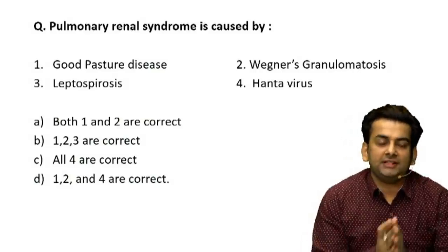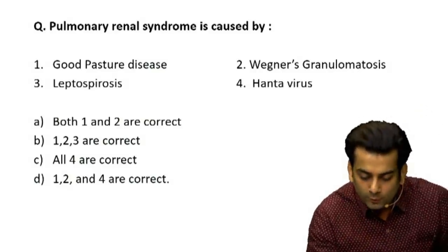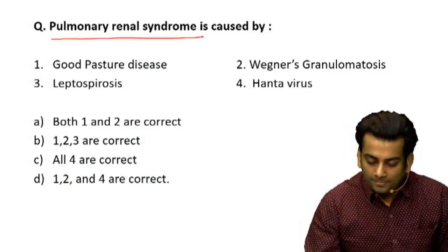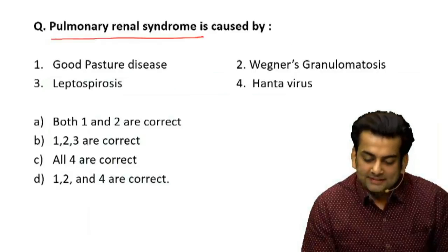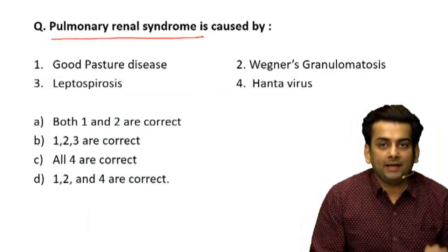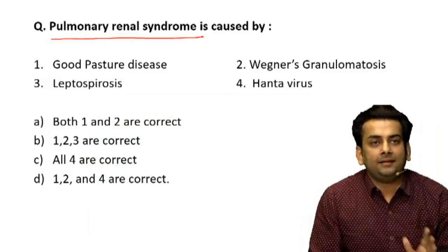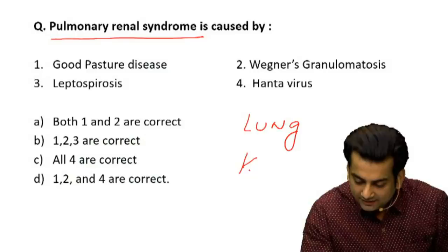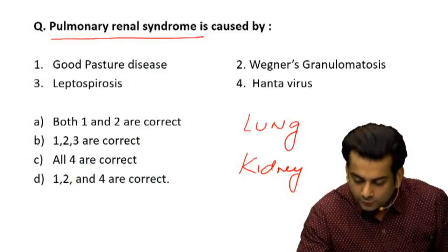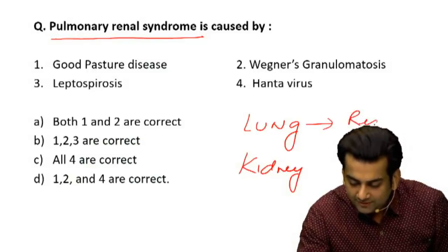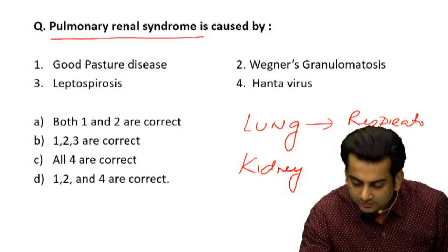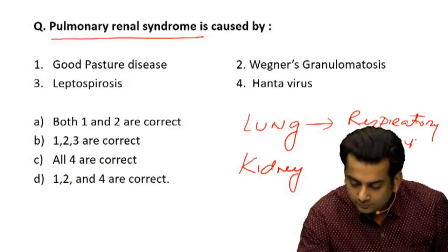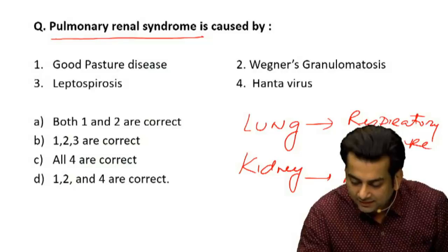Before entering into this question, it is essential to know what we mean by the term pulmonary renal syndrome. Pulmonary renal syndrome is defined by a disease that affects both the lung and the kidney, causing both respiratory failure as well as renal failure.